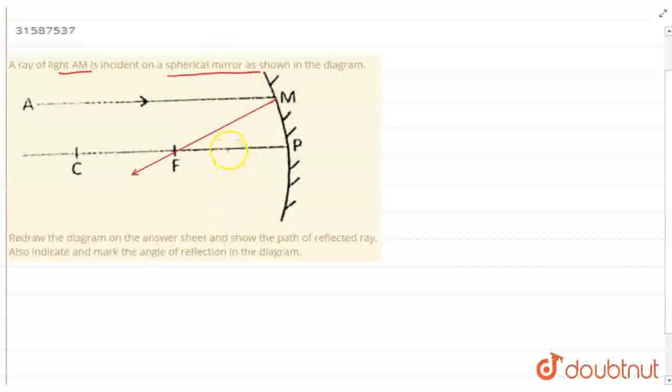To draw the angle of reflection, to show the angle of reflection, I need to draw the normal. The line joining the center of curvature and the point of incidence is the normal at the point of incidence. The line that joins center of curvature and the aim point M will be my normal at the point of incidence.